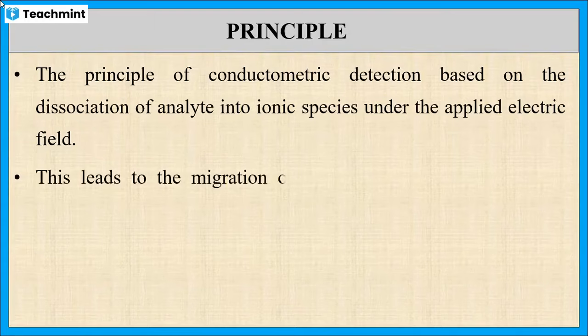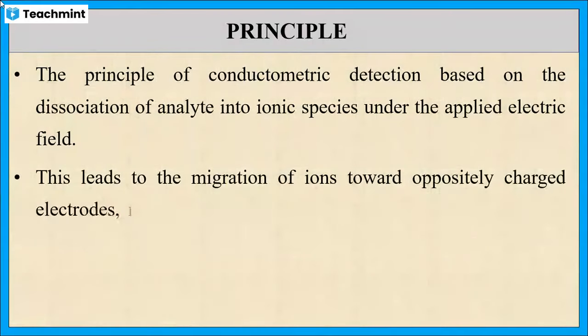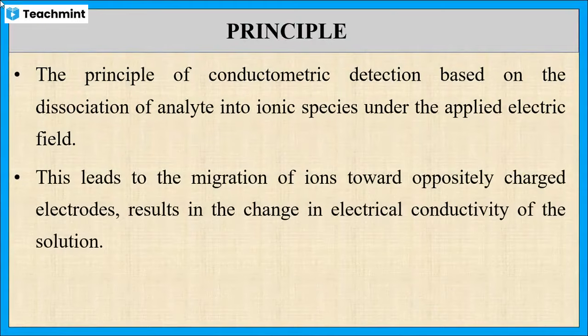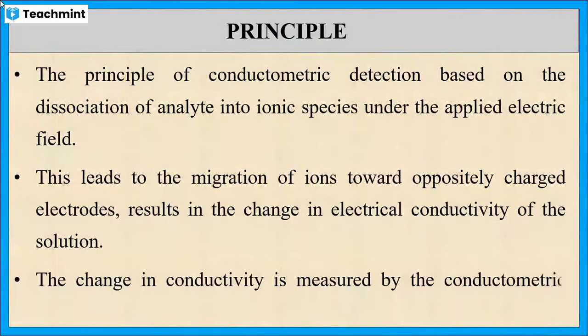These ionic species move towards oppositely charged electrodes—negative ions move towards the positive electrode and positive ions move towards the negative electrode. This results in a change in electrical conductivity of the solution, which is measured by conductometric sensors.